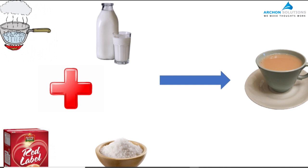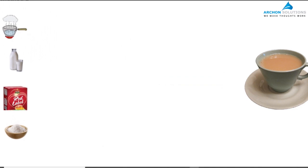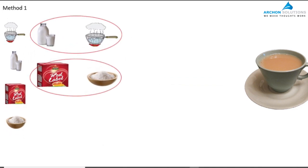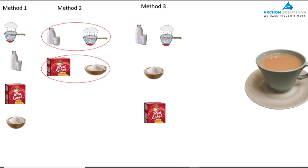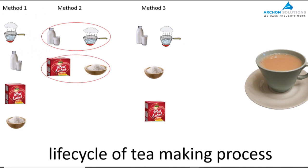Some people boil water first, add milk, add tea, then add sugar. For others, the order is to add milk and water together, bring it to boil, then add tea and sugar. Others boil water, add tea, brew it well, then add milk and sugar. The steps are the same but the order is based on your preference. If you are on a no-sugar diet, adding sugar becomes an optional step. But no matter what life cycle we follow, we all aim for just one thing: a refreshing drink to get you started for the day.